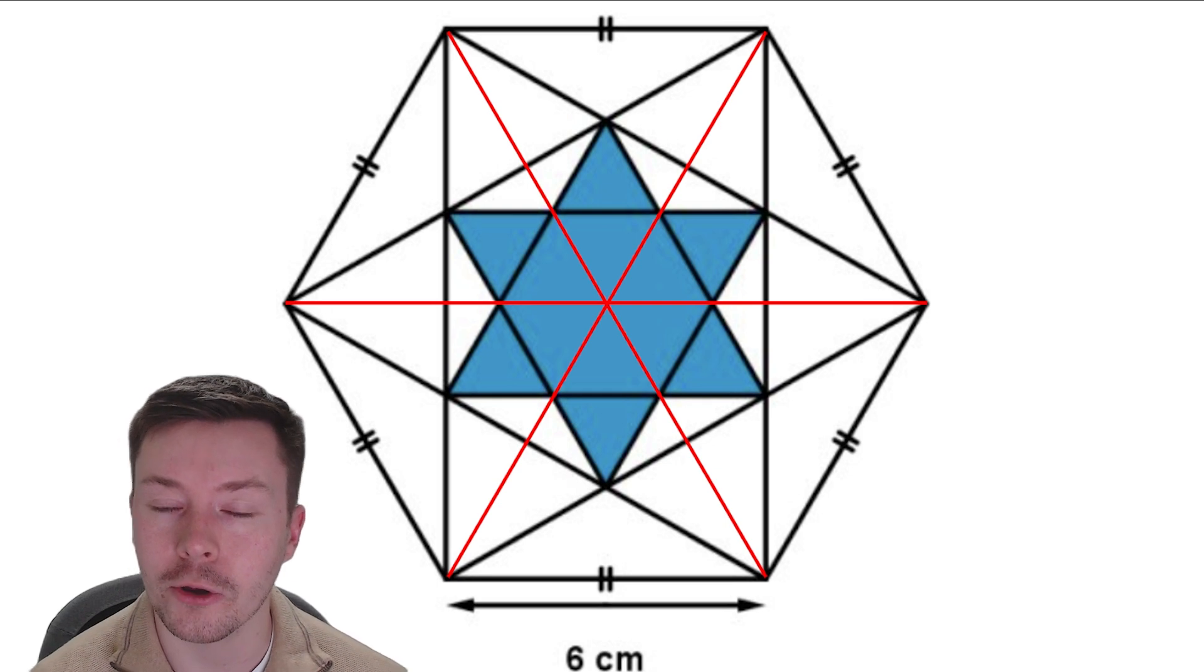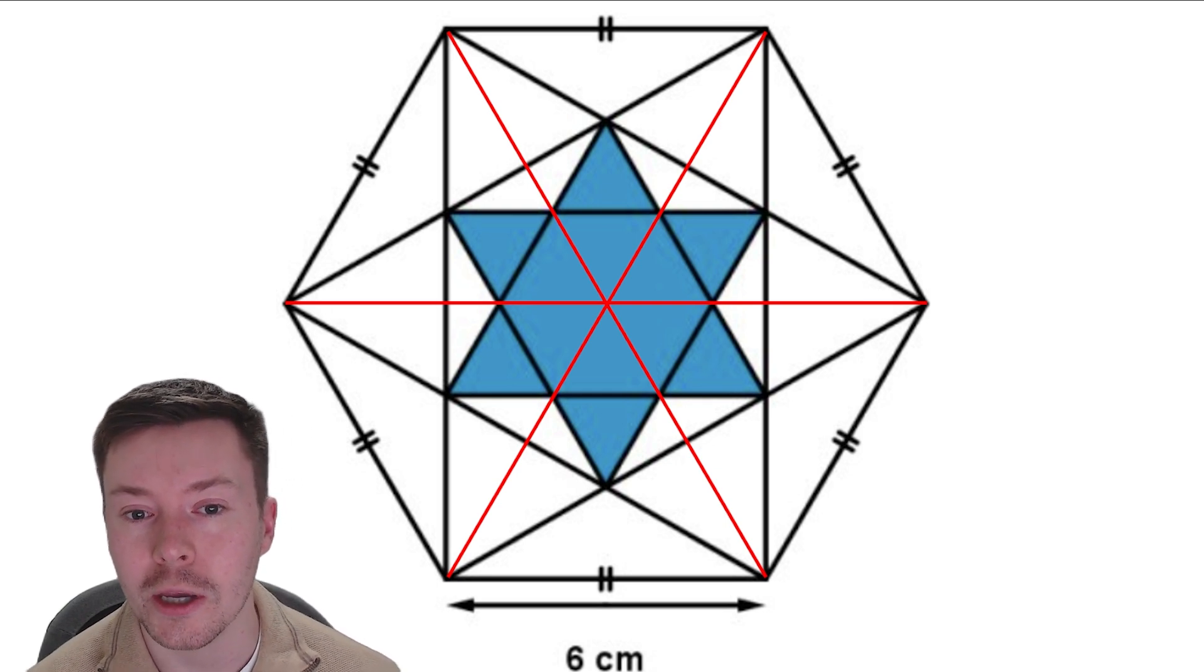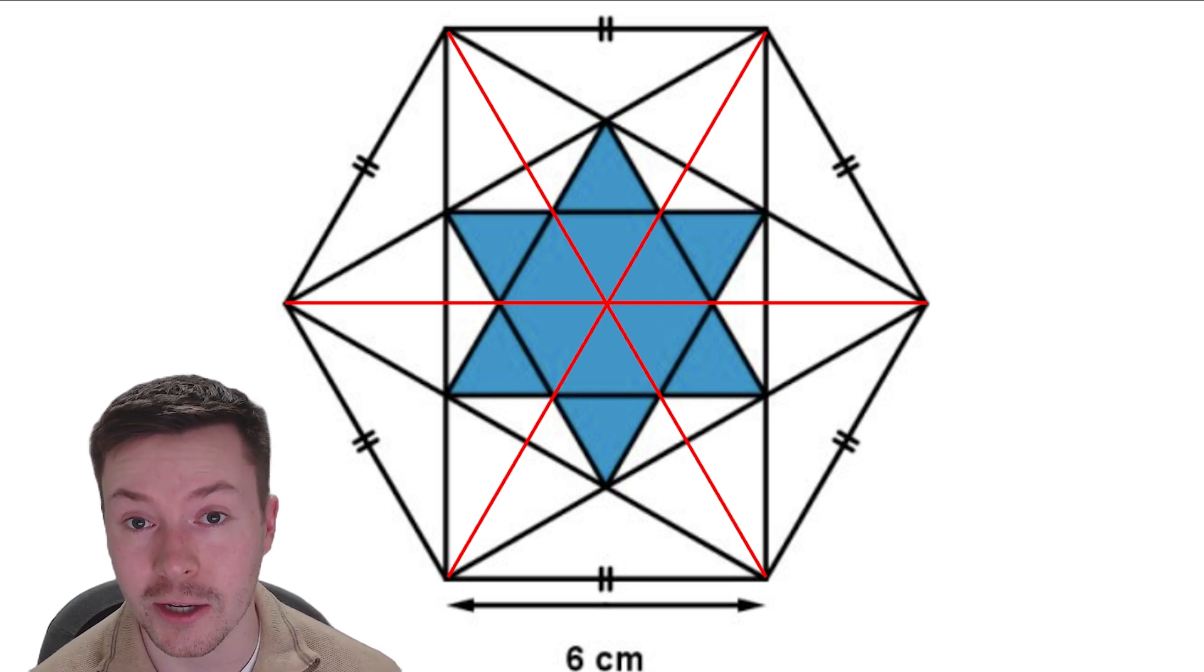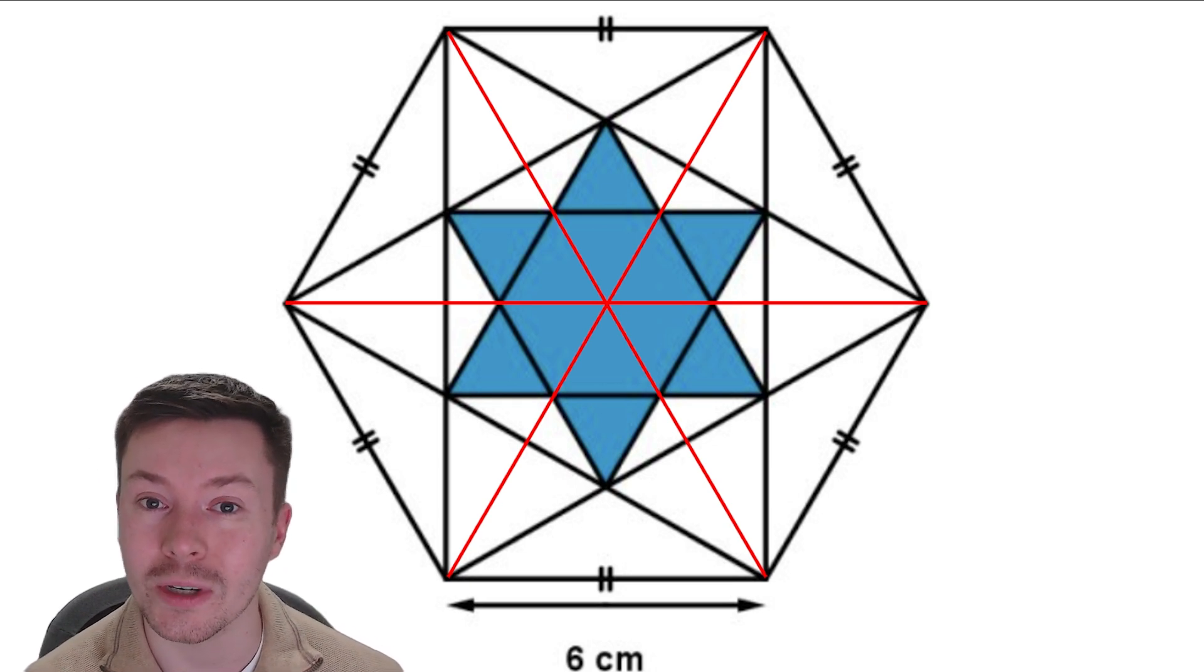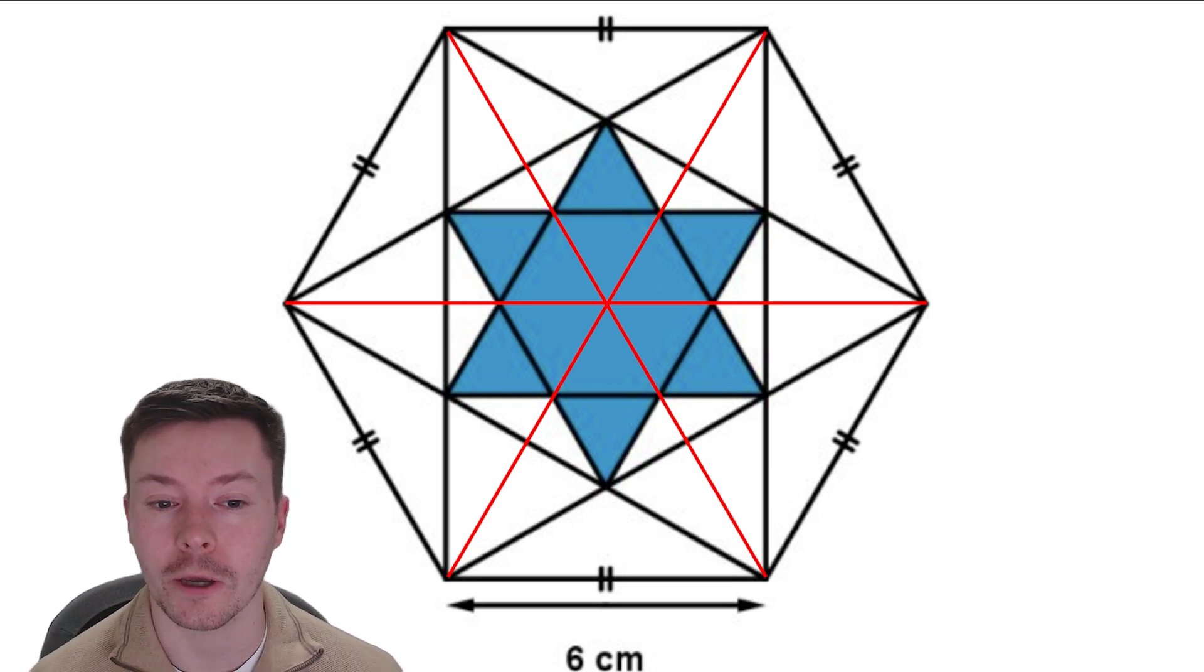Now I put these lines on first of all and what this shows is that the innermost hexagon, the hexagon inside the blue star, is split up into six equilateral triangles.